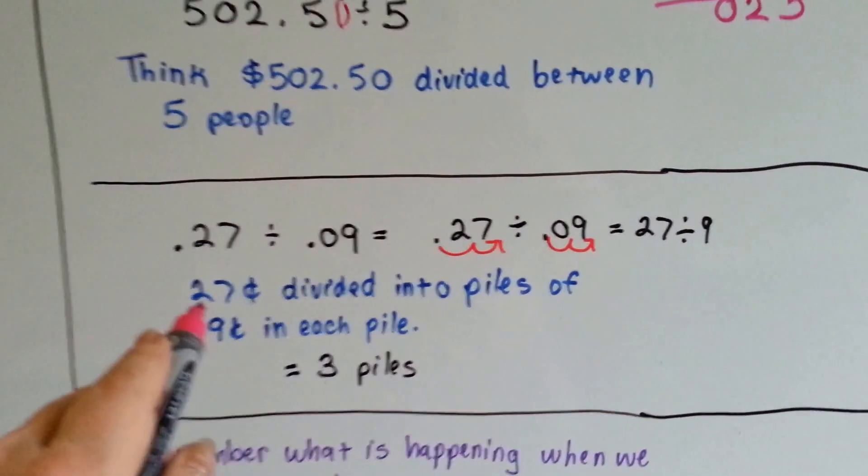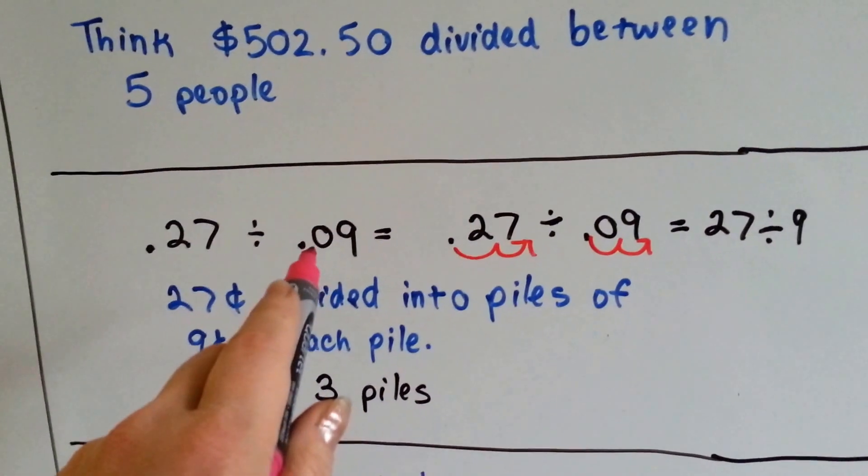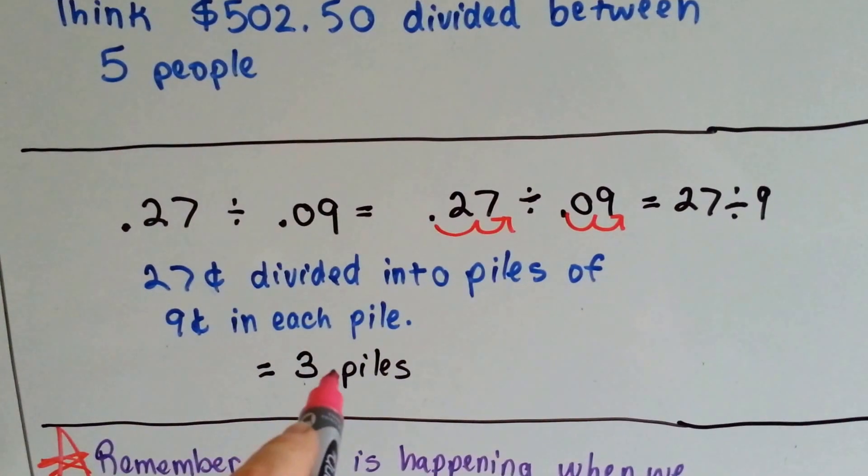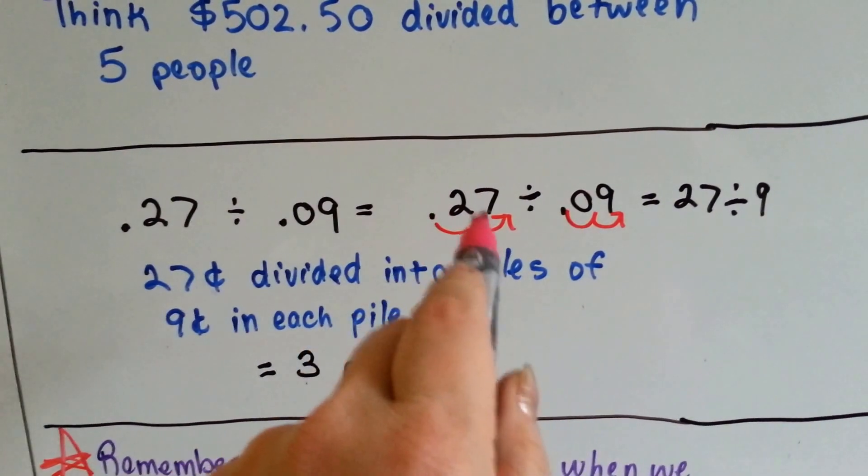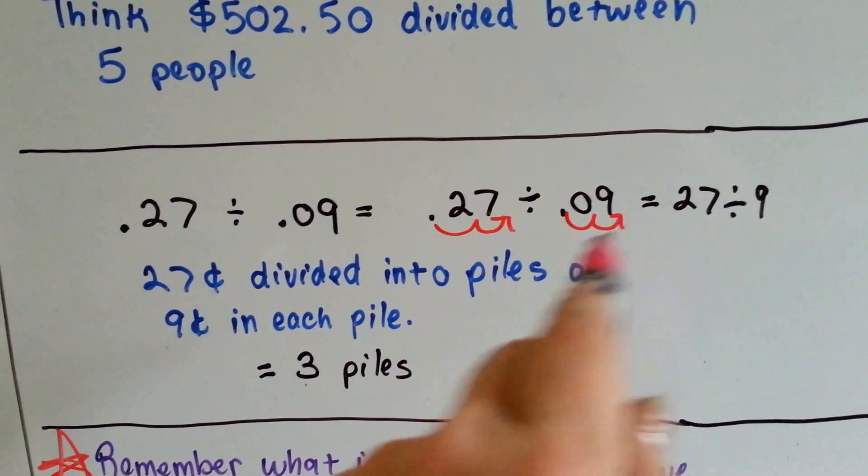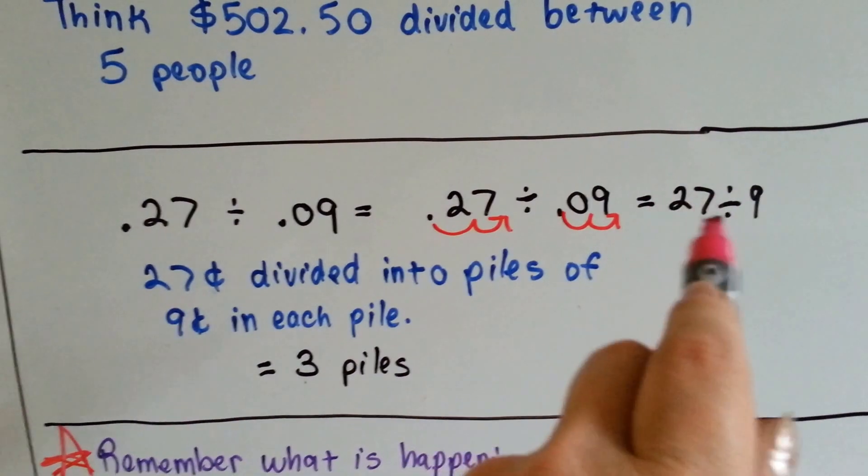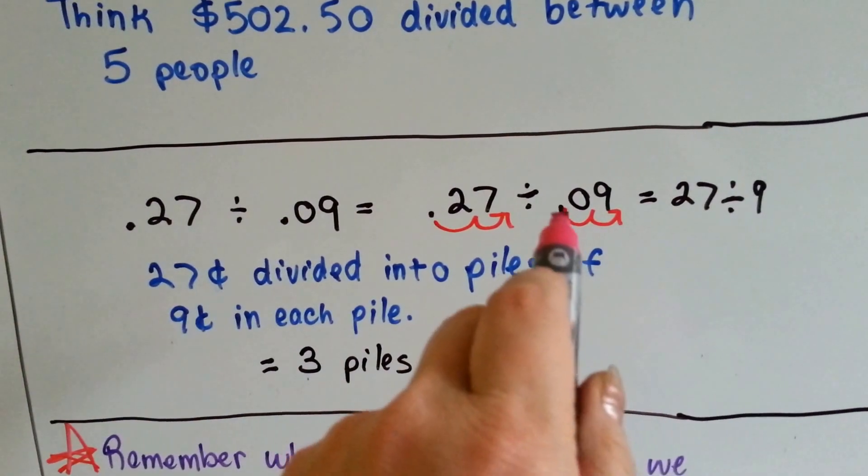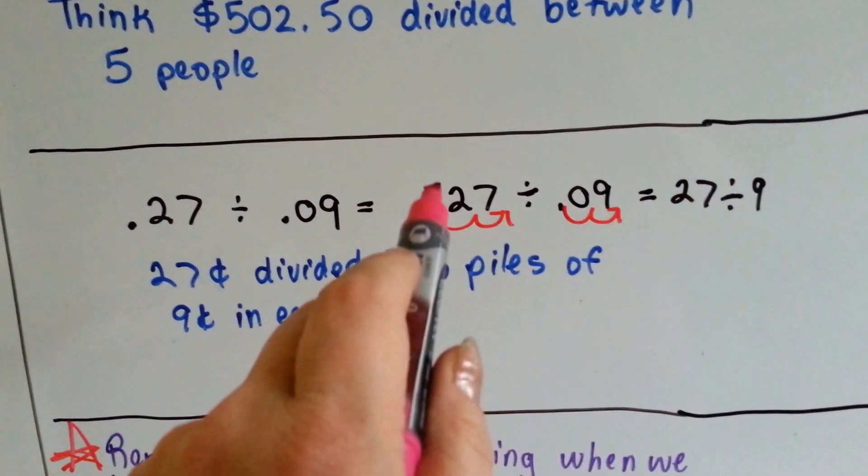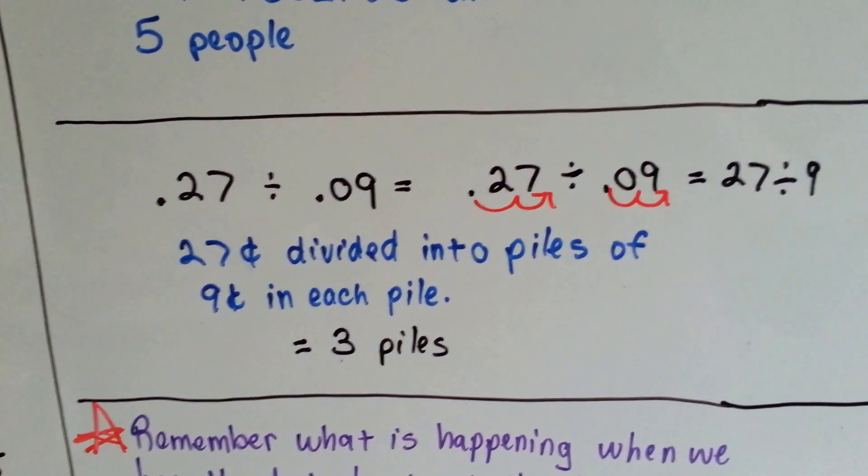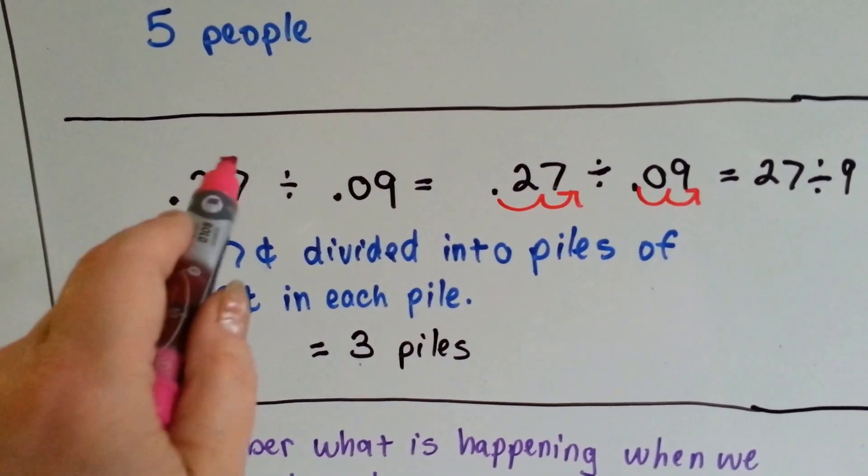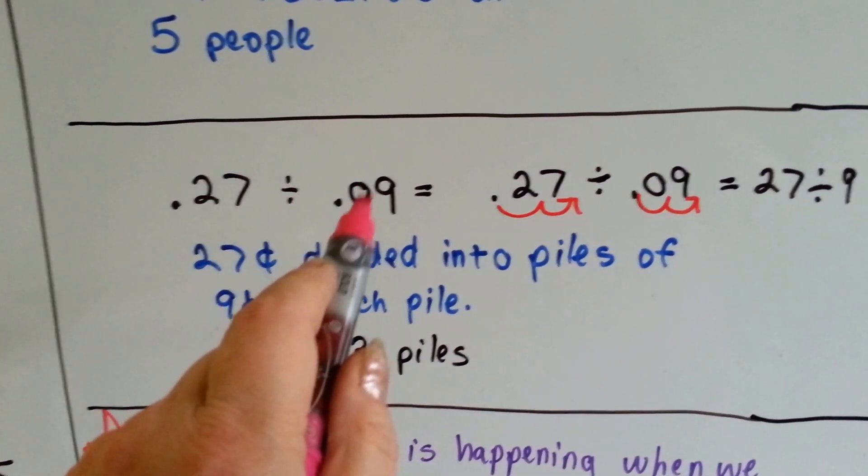If we had 27 cents and we wanted to divide it into piles of 9 cents, we'd have three piles. If we move the decimal point out of the equation, we have 27 divided by 9. Because if we move it two places for the nine, we can move it two places for the 27, and it moves it right out of the equation.